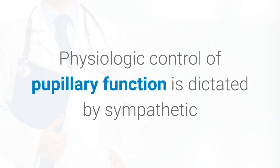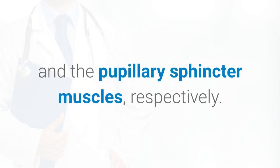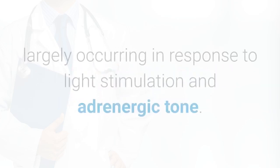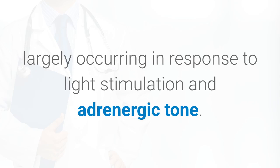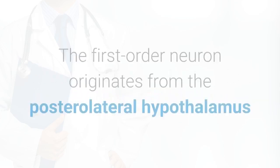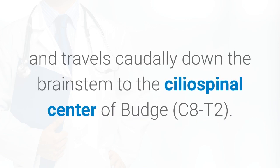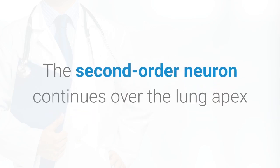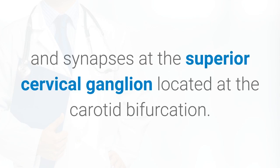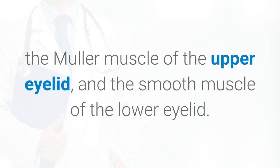Physiologic control of pupillary function is dictated by sympathetic and parasympathetic innervation to the pupillary dilator and sphincter muscles, respectively. Pupillary function is autonomic, largely occurring in response to light stimulation and adrenergic tone. The sympathetic pathway is a three-order neuron pathway that mediates pupillary dilation. The first-order neuron originates from the posterolateral hypothalamus and travels caudally down the brainstem to the ciliospinal center of Budge. The second-order neuron continues over the lung apex and synapses at the superior cervical ganglion at the carotid bifurcation. The third-order neuron ascends along the carotid artery into the cavernous sinus to synapse at the pupillary dilator muscle, the Müller muscle of the upper eyelid, and the smooth muscle of the lower eyelid.